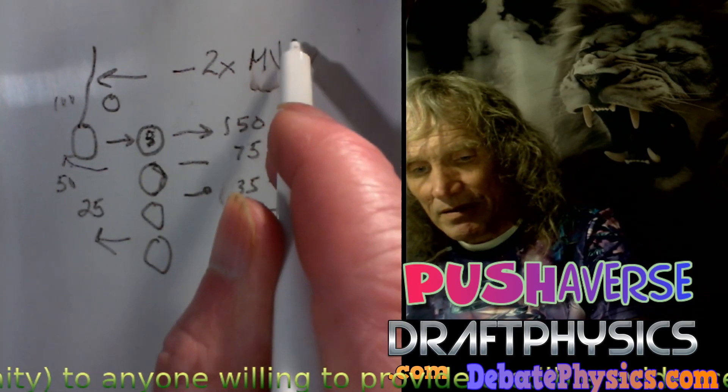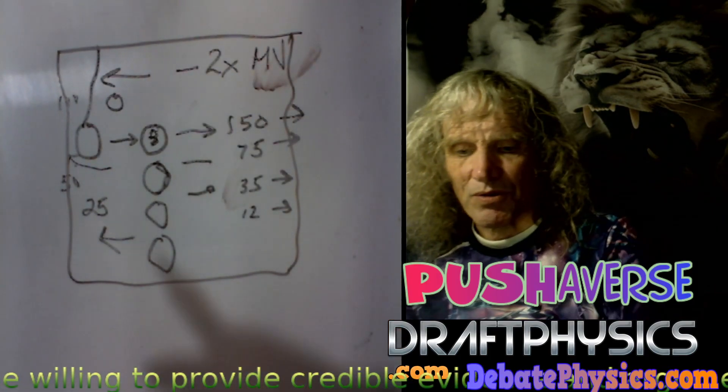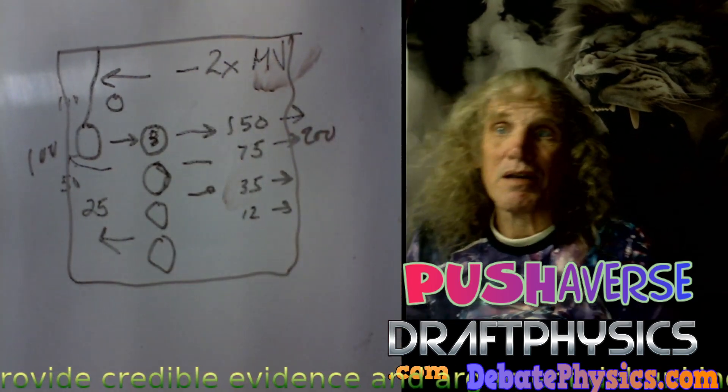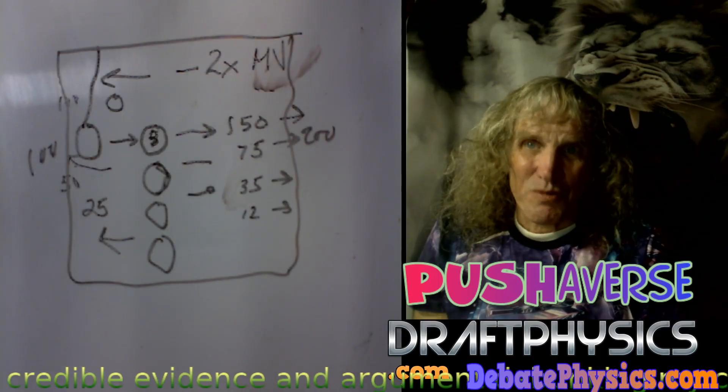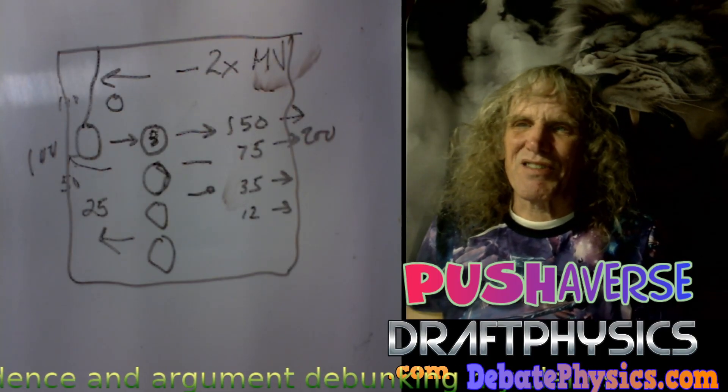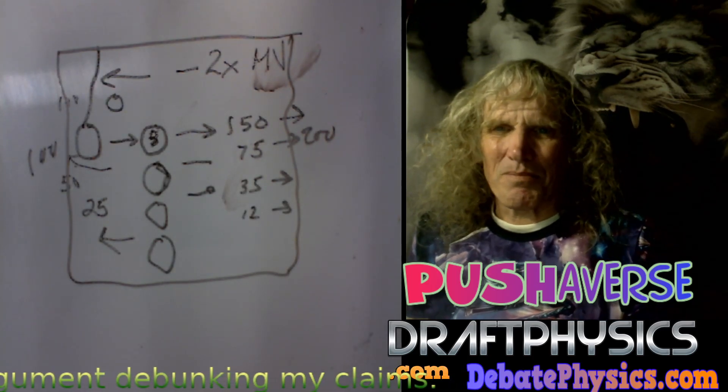So I'll double my momentum. So it's basically if I made this into a box, a little mysterious black box, that's what the black box would do. You put 100 in and you get 200 out for free. And momentum does the work.